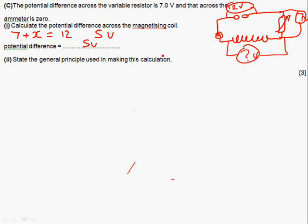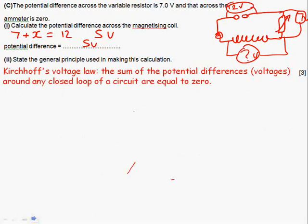State the general principle used in making this calculation. It's actually Kirchhoff's voltage law. The sum of the potential differences around any closed loop of a circuit are equal to zero. If you actually look at it, one side of this is going to be negative, one side is going to be positive. So if you take this as being a positive number, then this is going to be positive, negative, positive, negative. So it's basically saying that 12 volts, it's what I stated here, essentially, and followed through in the same way.